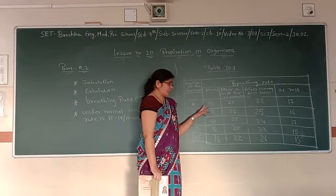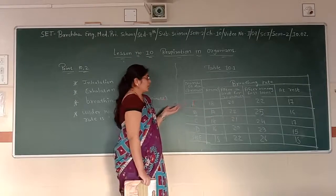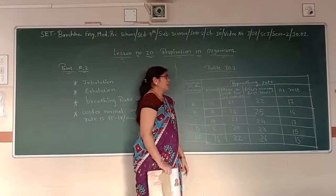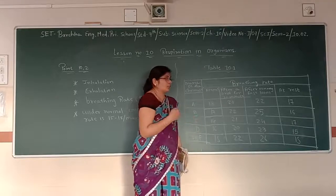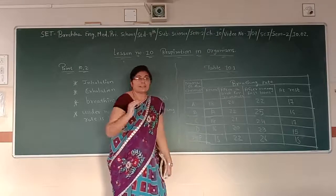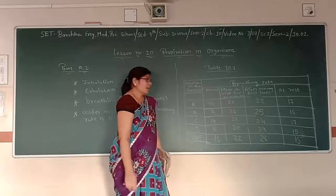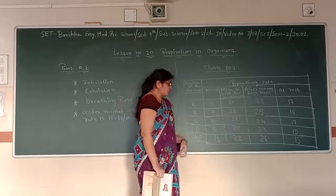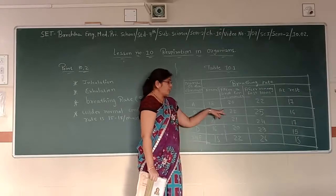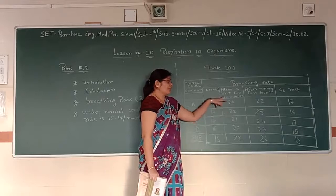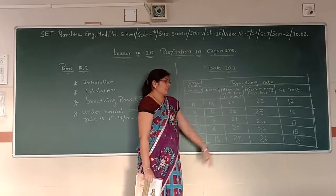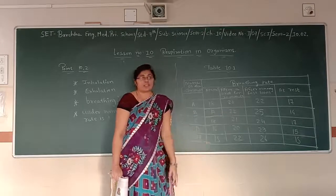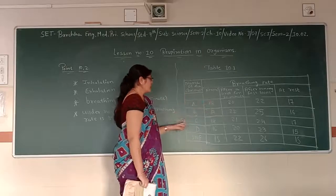So, the normal breathing rate of A is 18. Then, A after taking a walk, it increased up to 20. Then, after running fast up to 100 meter, it increased up to 22. And, when A takes rest, it becomes normal again up to 17. So, when B started taking a walk, first of all, its normal breathing rate is 17. When it started taking a walk, after 10 minutes, it increased up to 22. When B runs fast, it increased up to 25. And, when it takes rest, it just normalizes with 16.